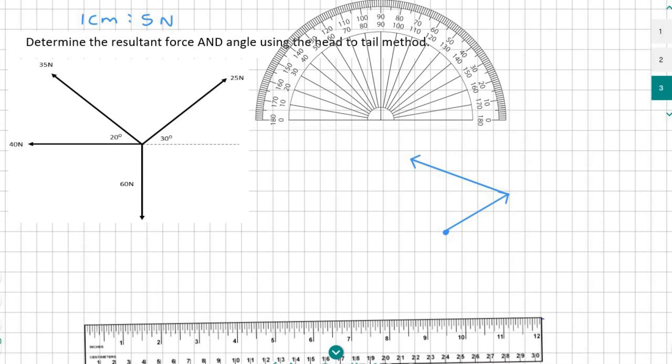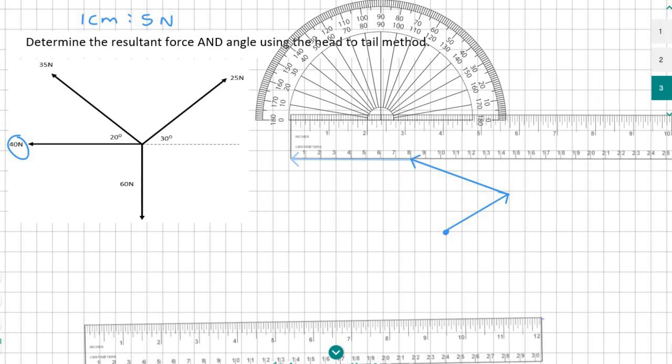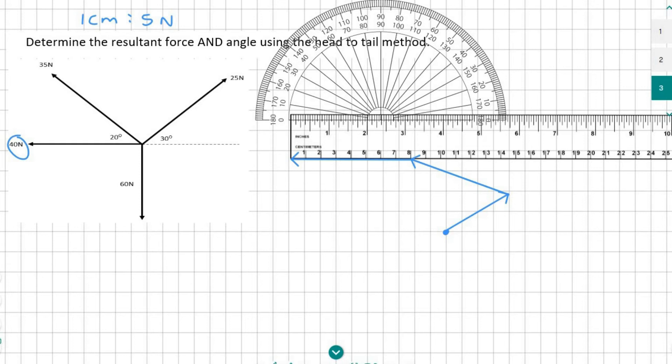Next I'm going to do the 40 newton. Now the 40 newton is nice and easy because it's going horizontally. There's no angle involved. So 40 newton is going to be eight centimeters long if I use a one to five ratio. And so there we have an eight centimeter line.